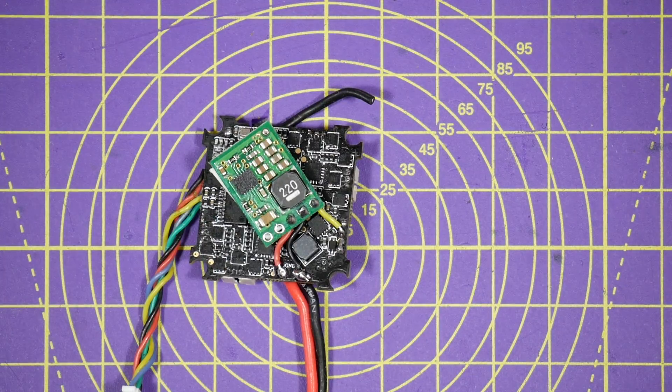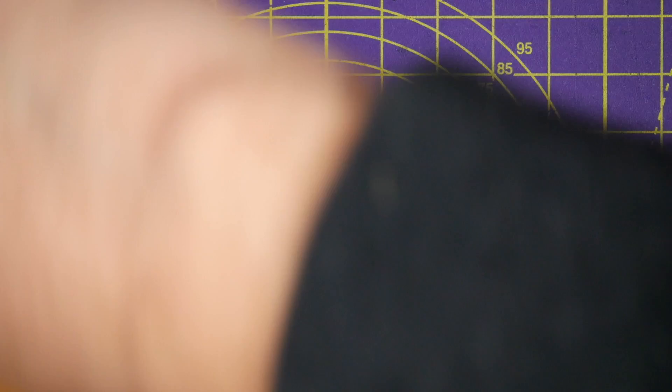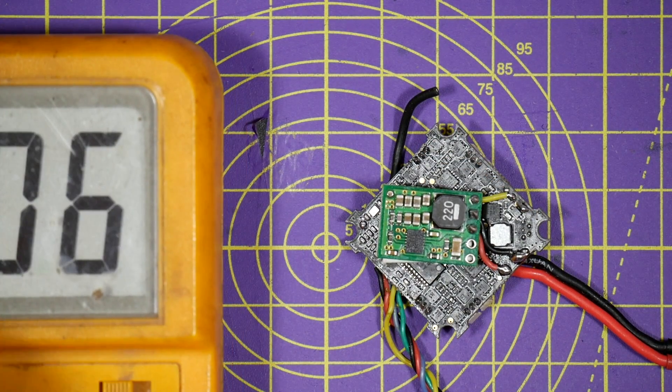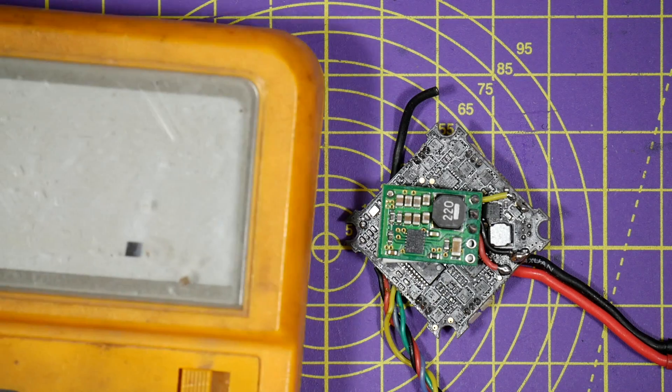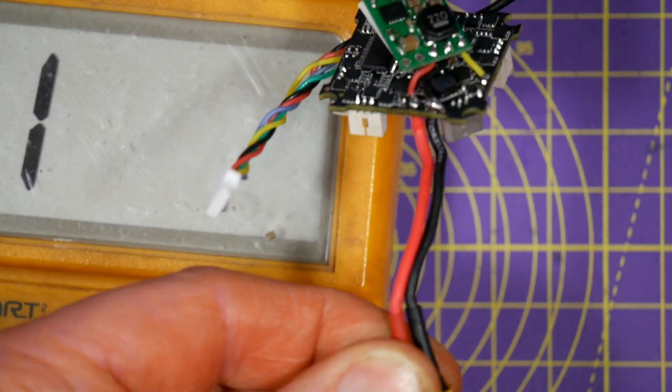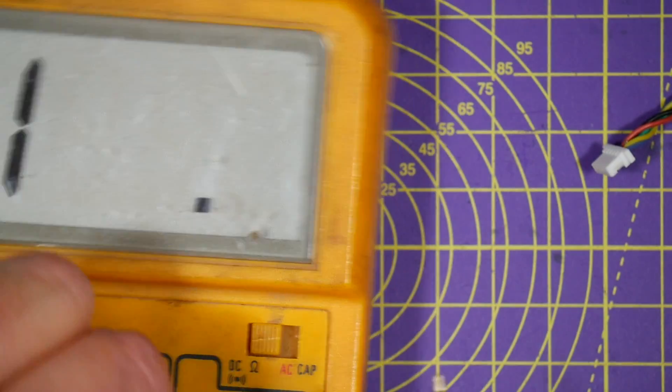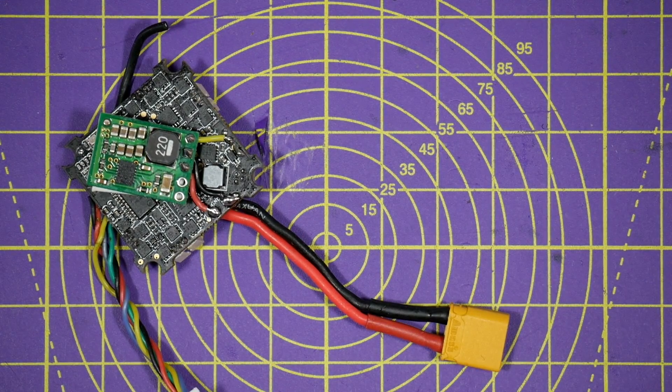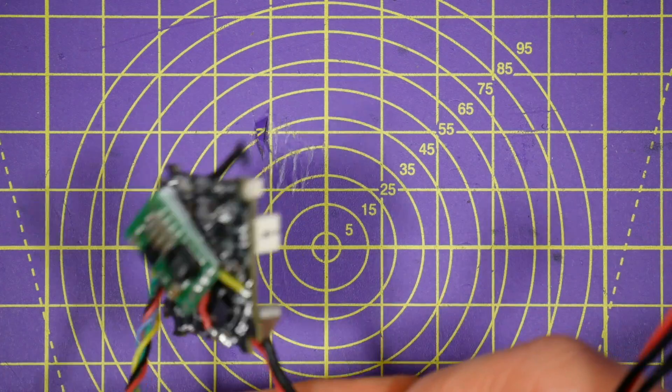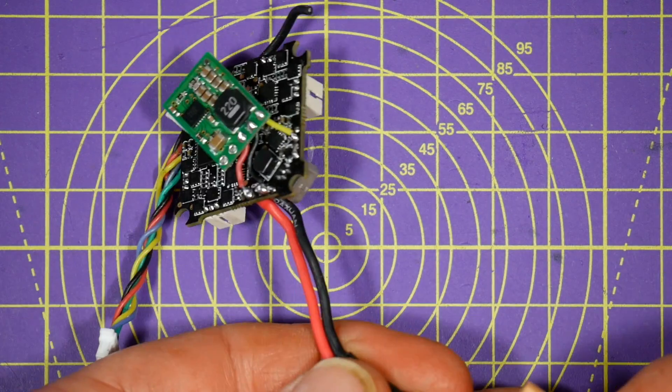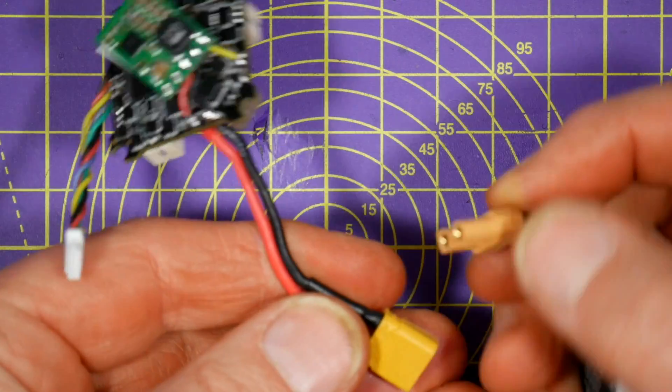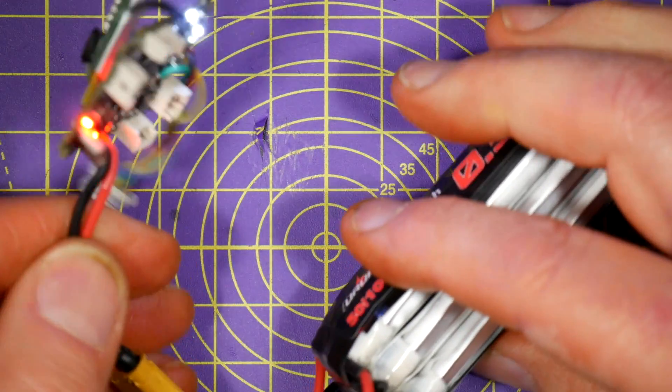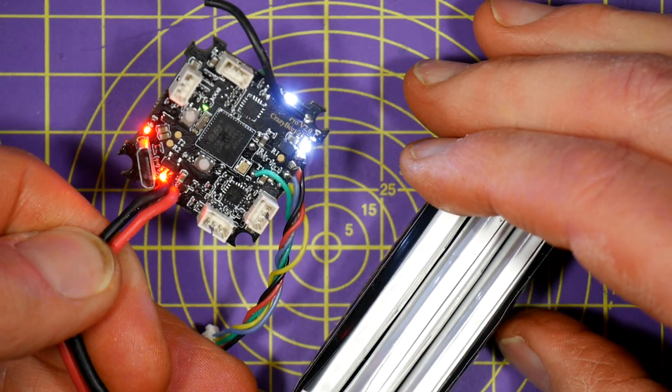So first things first, before we connect anything up, let's have a quick check and make sure that we haven't shorted out anything on the board. That's great. So that's all fine. So let's just connect a battery. Hopefully... Yay! There we go, all powered up as it should be.